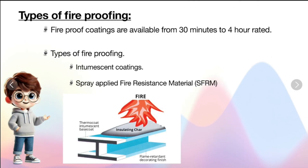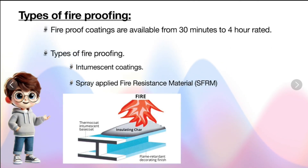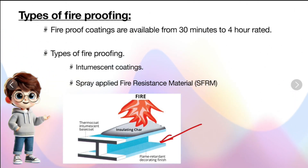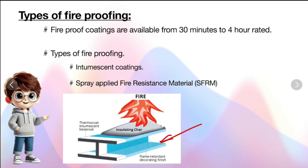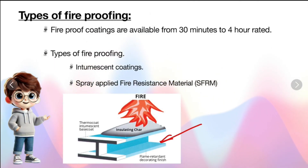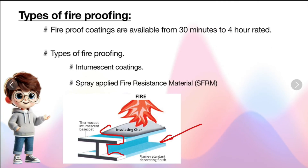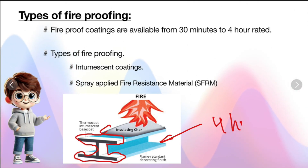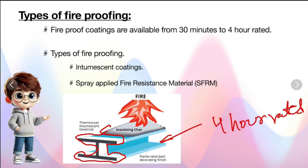First we look into intumescent coating. This blue color one is the intumescent coating — there is a thin layer of intumescent coating that we apply on the surface of steel. When steel is caught by fire and reaches high temperature, this paint will expand and form an insulation coating all around the steel. It can be up to 4-hour rated, but it is a costly process.